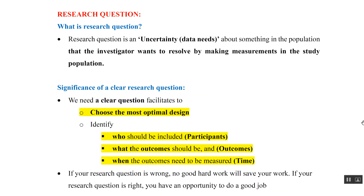A research question is an uncertainty or data need about something in the population that the investigator wants to resolve by making measurements in the study population. We need a clear research question to choose the most optimal study design, to identify the study participants, to identify the study outcomes, and to determine when outcomes need to be measured. If a research question is wrong, no work will be fruitful.